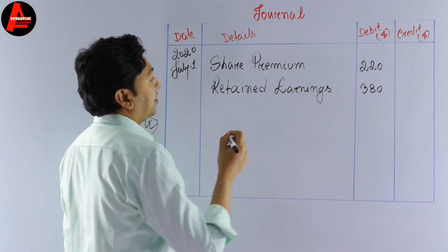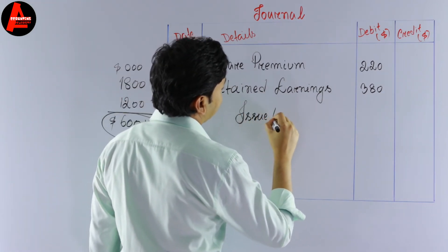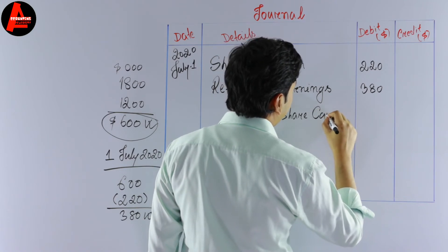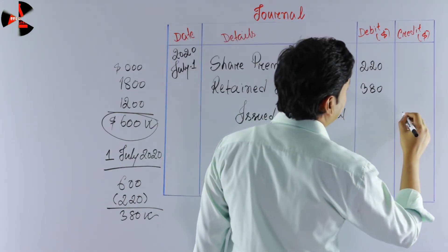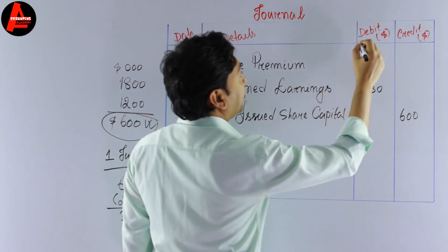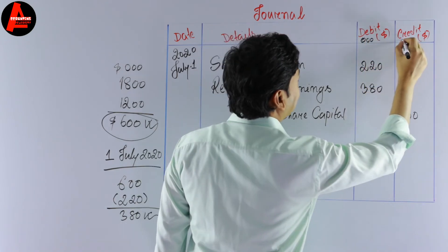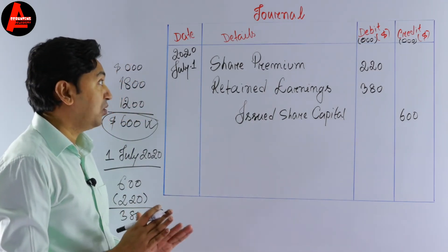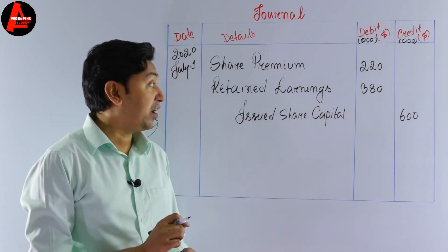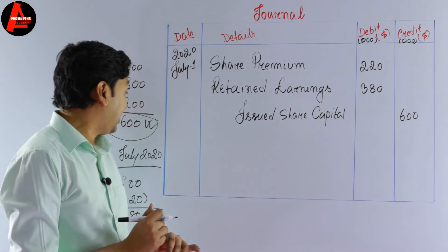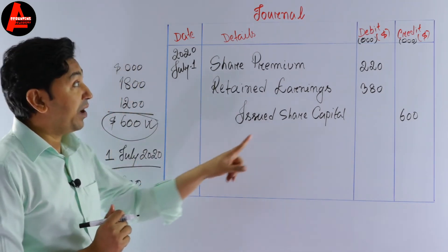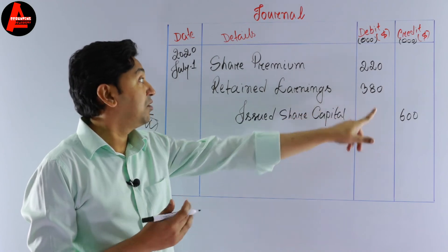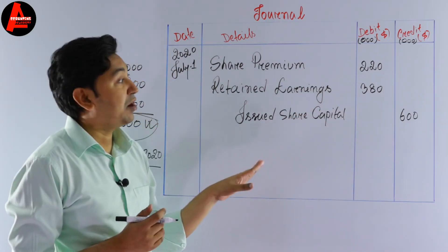Now we write the credit side: issued share capital. Share capital is a liability and it will now be increased, so increasing liability will be credited. Issued share capital: credit 600,000 dollars. So the bonus share amount is 600,000 dollars — we managed 220,000 dollars from share premium and 380,000 dollars from retained earnings, and issued share capital is credited. In 2020 share capital is 1,800,000 dollars which was 1,200,000 dollars in 2019.